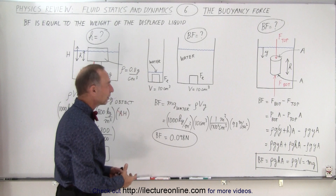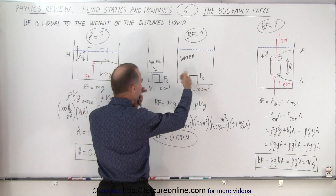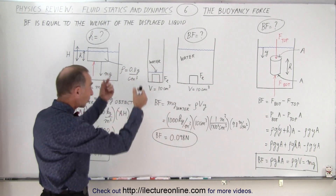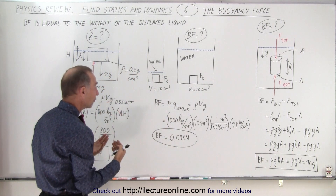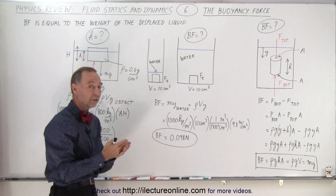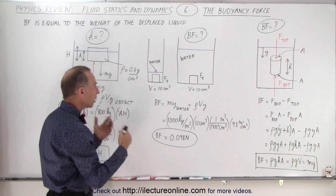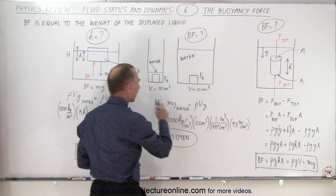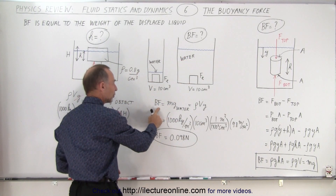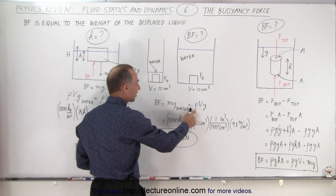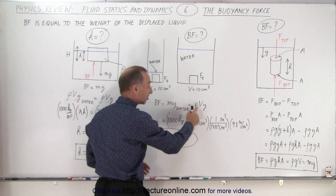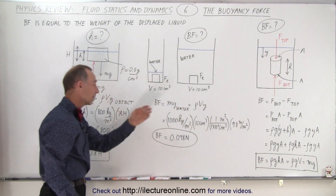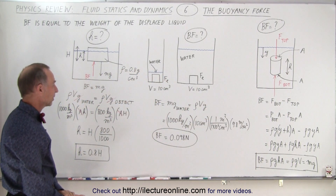It really doesn't matter if you put an object in a little bit of water or a lot of water. In this case, if the object is made out of iron and the volume is 10 cubic centimeters, it will sink to the bottom. The buoyancy force will be the same for both because both blocks displace an equal volume of water, and the height of the water makes no difference at all. The buoyancy force equals the density times the volume of the object times g, giving a buoyancy force of 0.098 newtons.